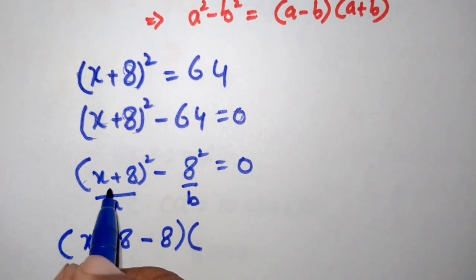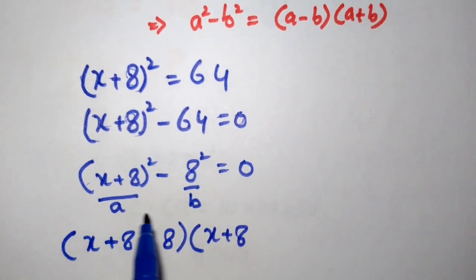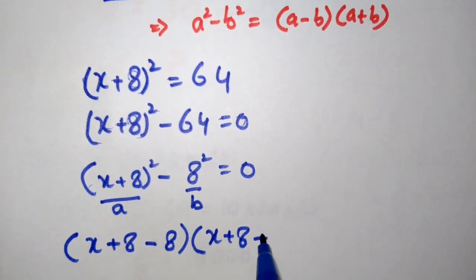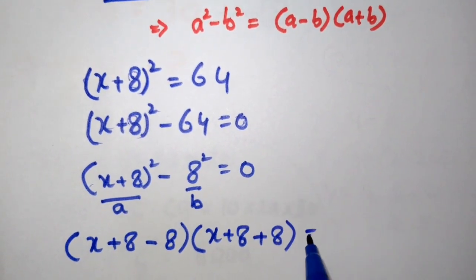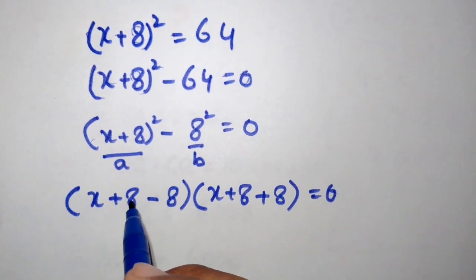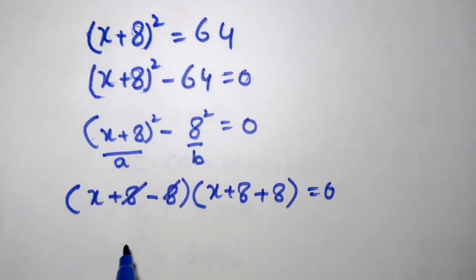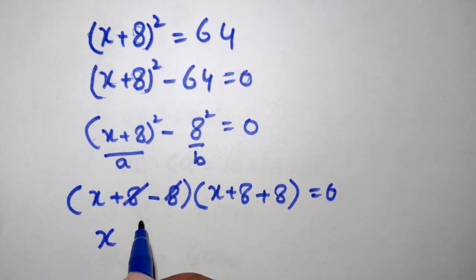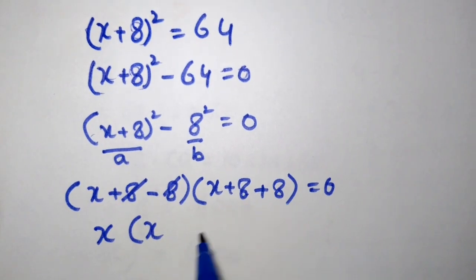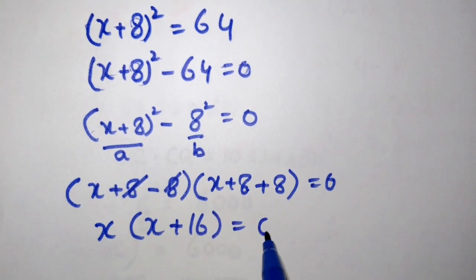This becomes (x + 8 - 8)(x + 8 + 8) = 0. The +8 and -8 cancel, giving x(x + 16) = 0.